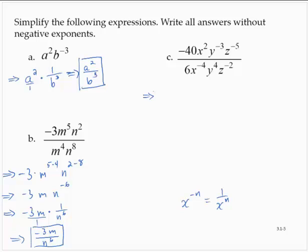Using a similar idea in exercise c, it's just a little bit more complicated. I would have negative 40 over 6. Well, 40 over 6 I can reduce that by a factor of 2, so I'd have a negative 20 over 3. I would have an x to the 2 minus negative 4, I would have a y to the negative 3 minus 4, and I would have a z to the negative 5 minus negative 2. So that would give me negative 20 thirds, I would have an x to the sixth, a y to the negative 7, and a z to the negative 3.